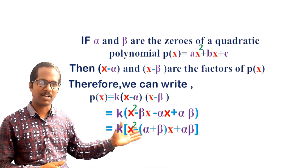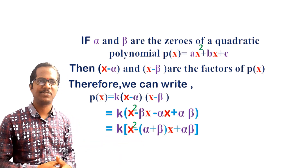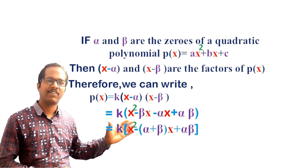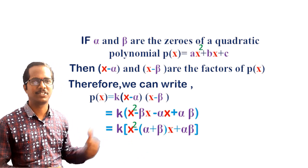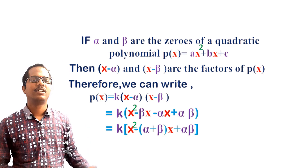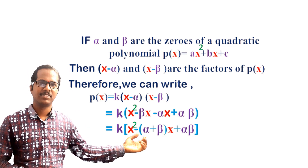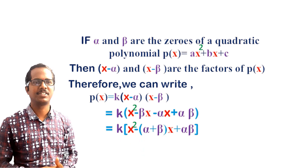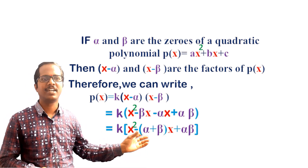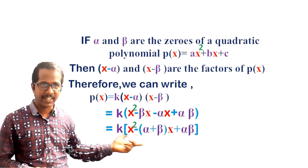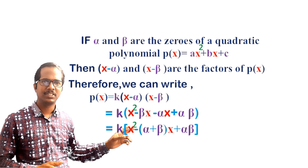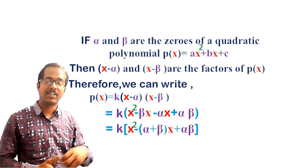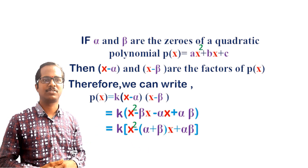In this formula, (alpha + beta) is the sum of zeros and (alpha × beta) is the product of zeros. So if we know the zeros, we can use this formula to find the required polynomial. Also, if we are given the sum and product of zeros, we can also use this formula. This formula can be used in two situations: when we are given the zeros directly, and when we are given the sum and product of the zeros.